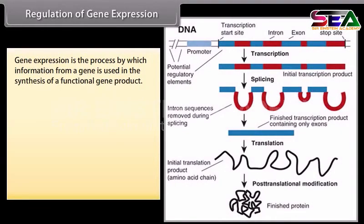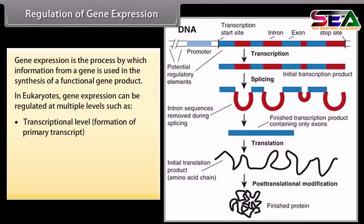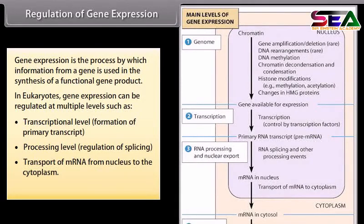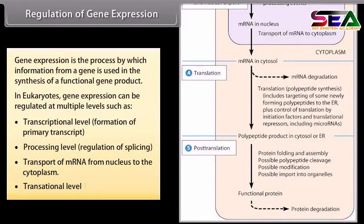Gene expression is the process by which information from a gene is used in the synthesis of a functional gene product. In eukaryotes, gene expression can be regulated at multiple levels such as transcriptional level, formation of primary transcript, processing level, regulating of splicing, transport of mRNA from nucleus to the cytoplasm, translational level, and positive and negative regulation.